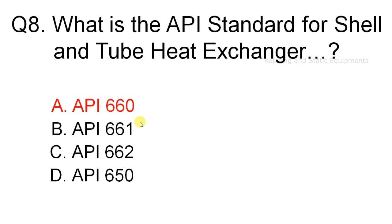Question 8: the correct answer is Option A — API 660. The API standard for shell and tube heat exchangers is API 660. This standard specifies requirements and gives recommendations for the mechanical design, material selection, fabrication, inspection, testing, and preparation for shipment of shell and tube heat exchangers for the petroleum, petrochemical, and natural gas industries.